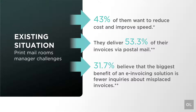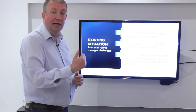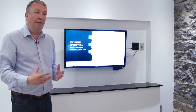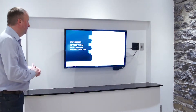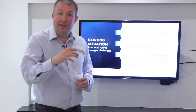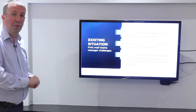Here are some facts. 43% of people in the mail room want to improve and reduce their speed — that's the speed of getting print into envelopes and out into the post. 53% of people still actually print their invoices and put them into an envelope, so there's still a huge market of people trying to do this. But 31% of people still believe there's an issue with emailing and how to make that whole process digital.